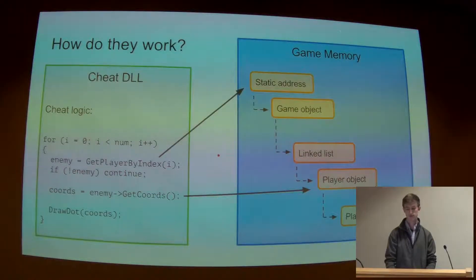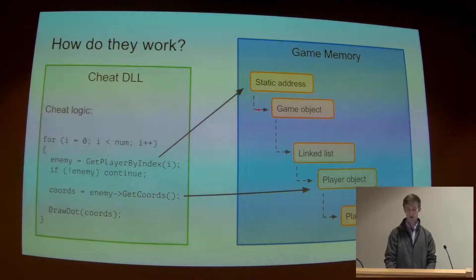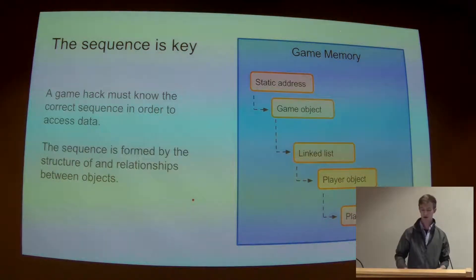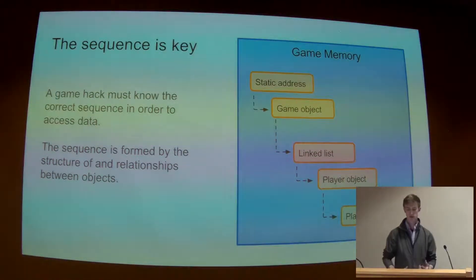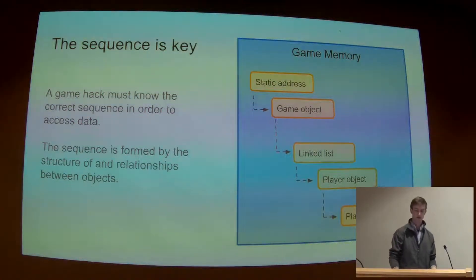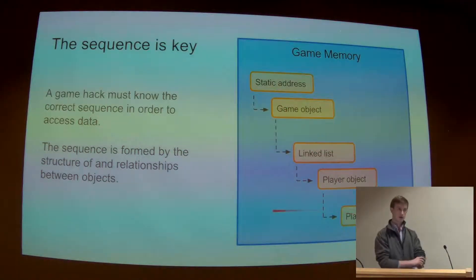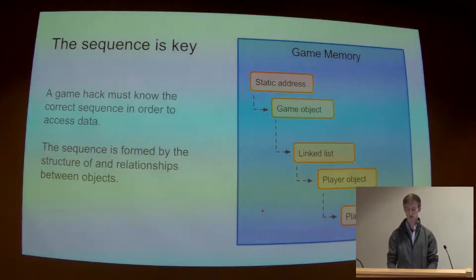The key concept here is that we're starting at a predictable address and performing a sequence of offsets and dereferences down to the data we're actually interested in — in this case, our player's position. The sequence — the pattern of offsets and dereferences — is crucial to making this work. The specifics of that pattern are formed by the structure of and relationships between the game objects. It's our job as reverse engineers to figure out how those objects have been implemented so we can traverse them ourselves.